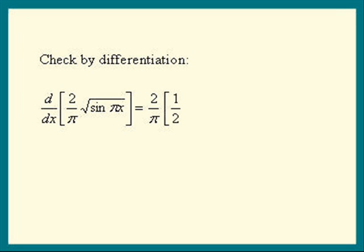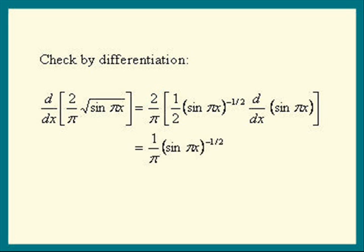Pull down the power. Subtract 1 from the power. And differentiate whatever is raised to the power. We might as well cancel the 2's now. We get 1 over π times sine πx to the negative 1 half times—differentiate sine πx—we get cosine πx times π. Now the π's cancel, and we do get the integrand.